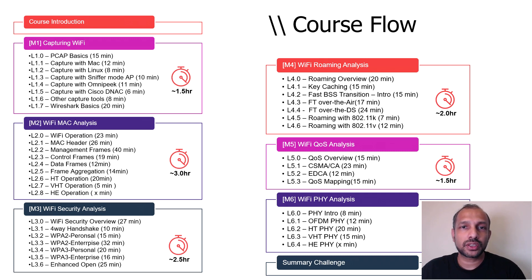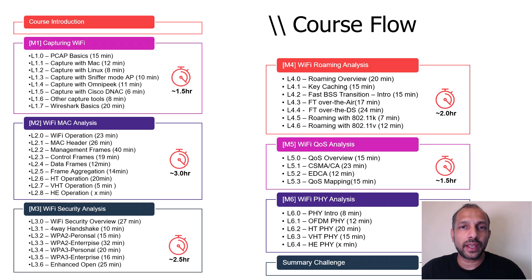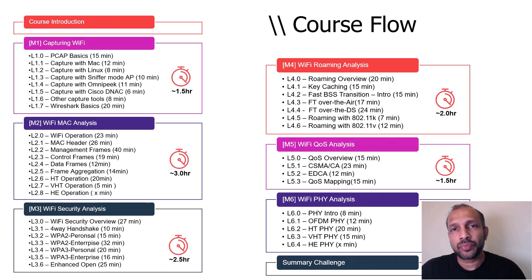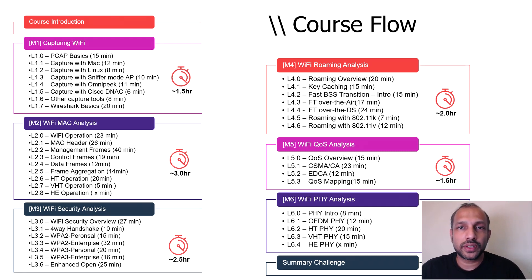We then focus on three key areas: security, quality of service, and roaming. These are the three most important areas of wireless analysis. After that, we finish with the PHY layer, covering the important technologies: 11n, 11ac, and 11ax in detail.